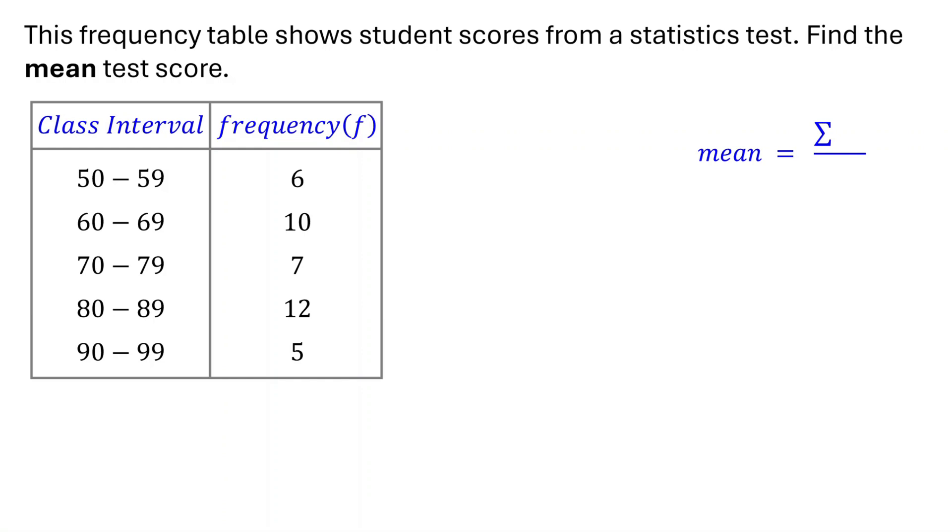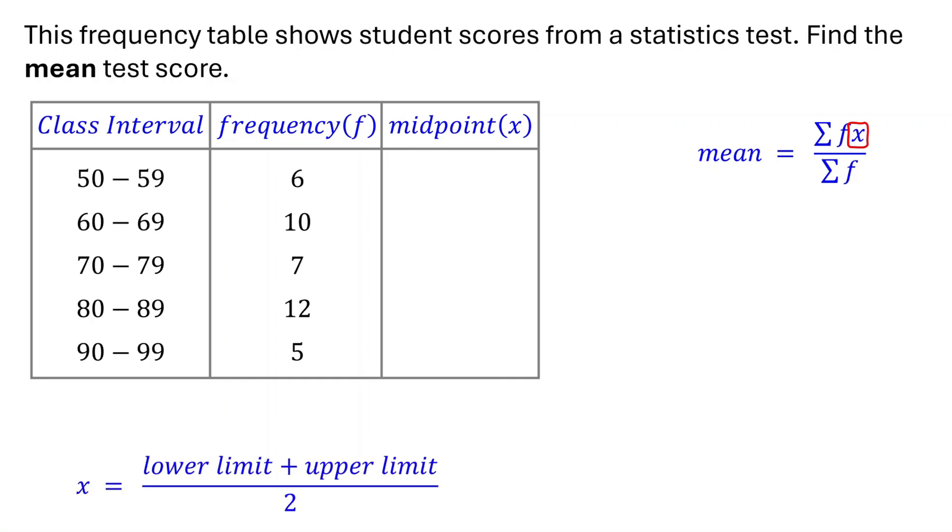The mean of grouped data is calculated using this formula. Here, x is the midpoint of each class interval, and that is the first thing we need to calculate. The midpoint of a class is the average of its lower and upper limits. In the first class, the lower limit is 50 and the upper limit is 59.